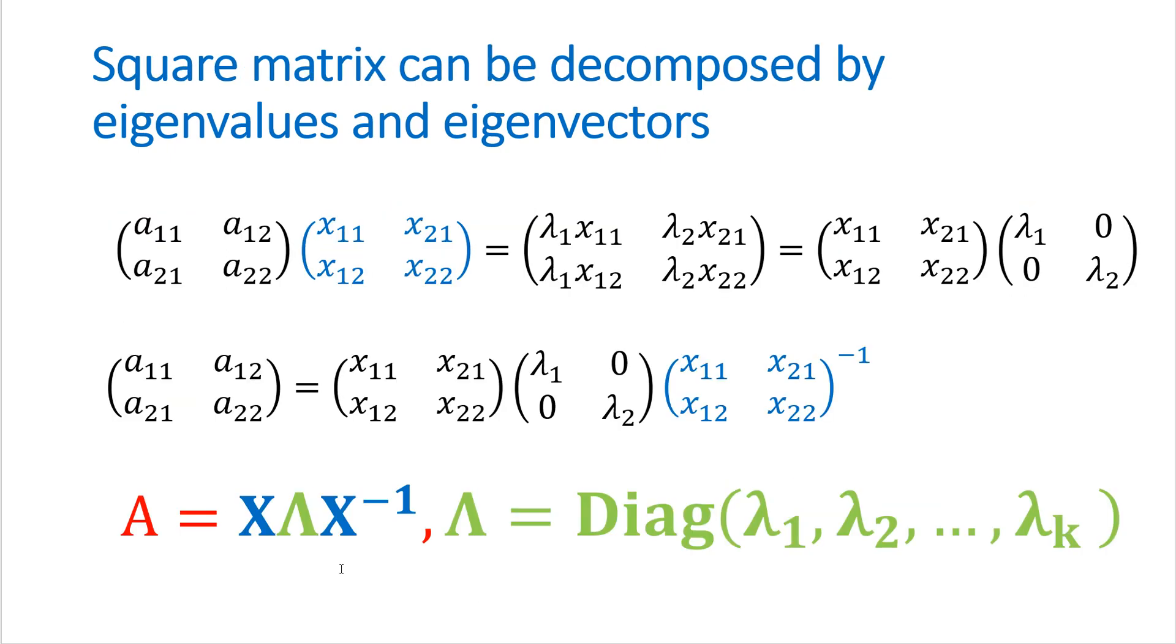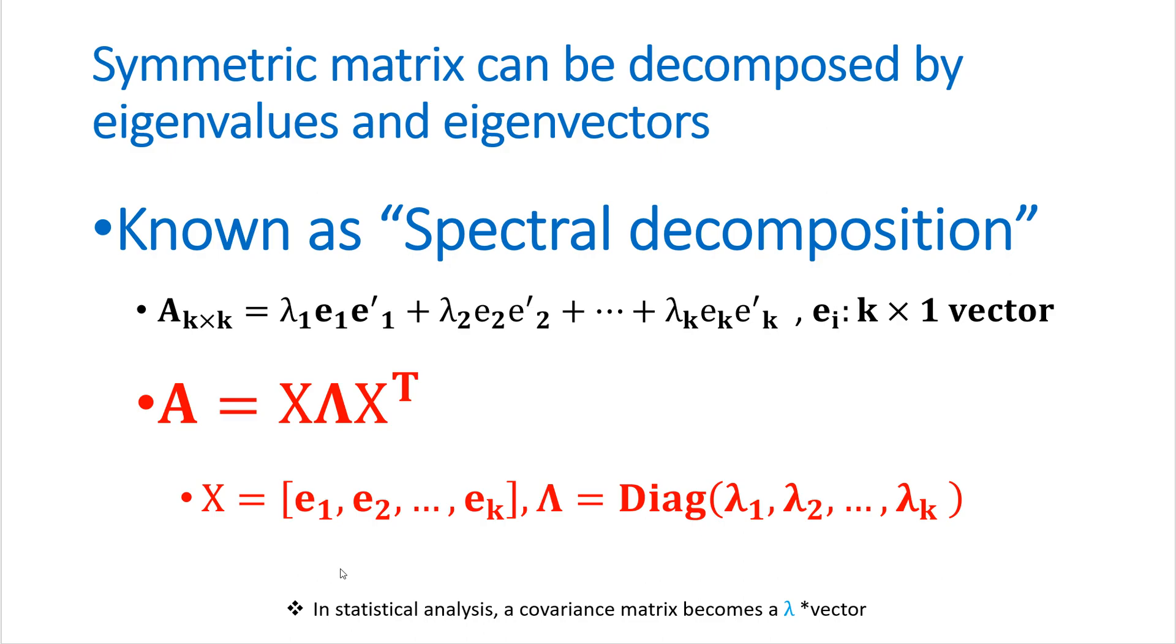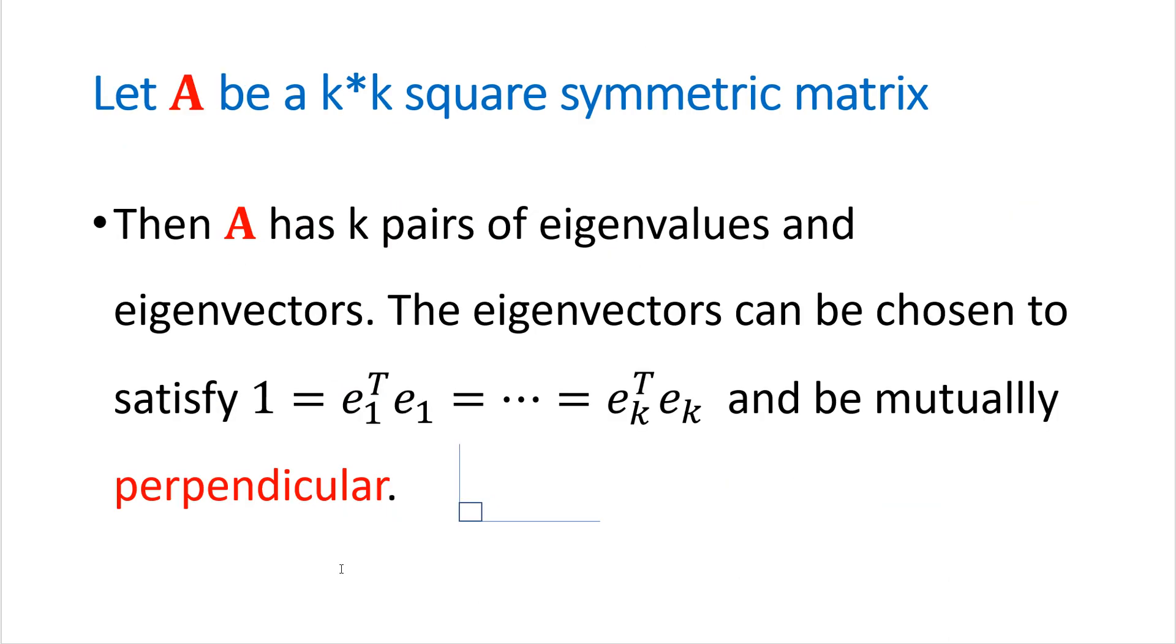So A matrix can be decomposed by lambda x inverse for square matrix. And symmetric matrix A can be decomposed by x times lambda times transpose of x.